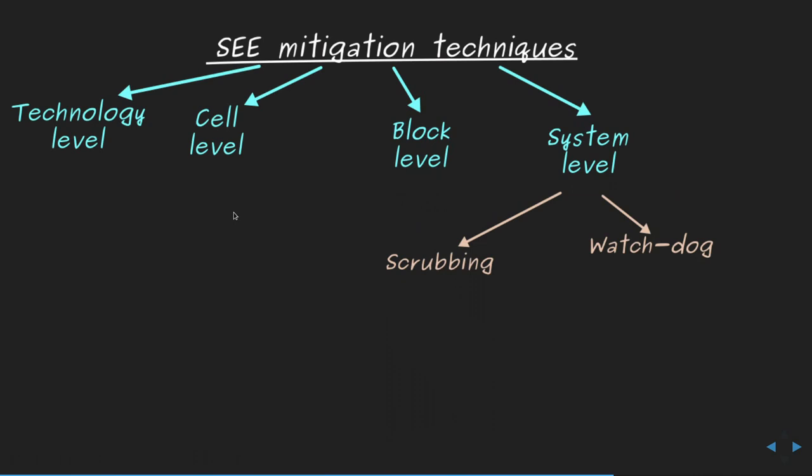For systems that are not mission-critical and can tolerate some downtime, scrubbing is an option: periodically checking the state of the system and refreshing it if an error is detected — using parity bits or a copy of the data in a safe space — or using a watchdog that detects a fault and reinitializes the whole system.